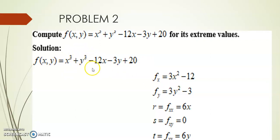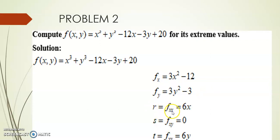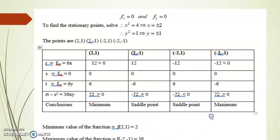Partially differentiating with respect to x: x³ gives 3x², y³ gives 0, -12x gives -12. So fx = 3x² - 12. For fy: x³ gives 0, y³ gives 3y², -3y gives -3. So fy = 3y² - 3. The second derivatives are r = fxx = 6x, t = fyy = 6y, and s = fxy = 0.